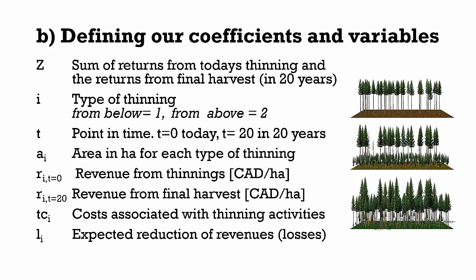Generally, a variable is a symbol that we assign to an unknown value that can change, and it is usually represented by letters. The coefficient of a variable is the number that is placed in front of a variable. Using the description of our problem, we will now assign a coefficient or variable to every piece of information that we found in the text.